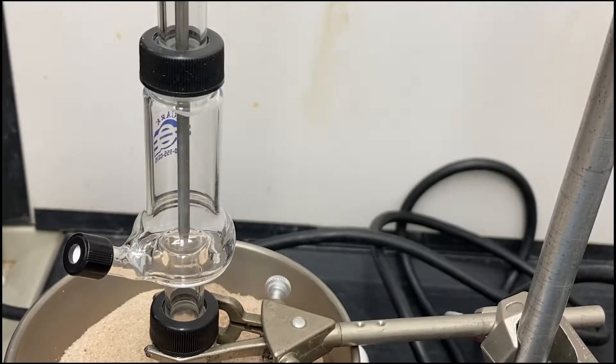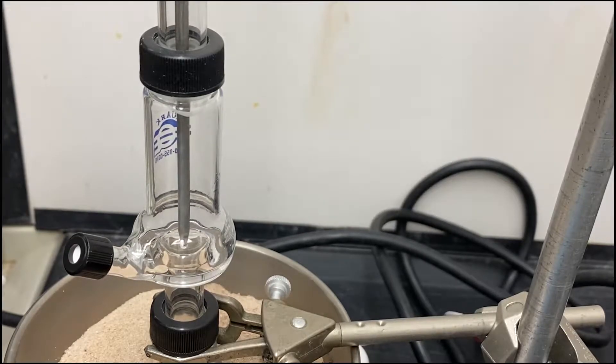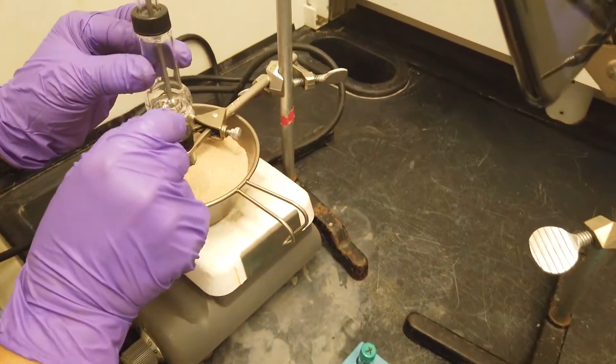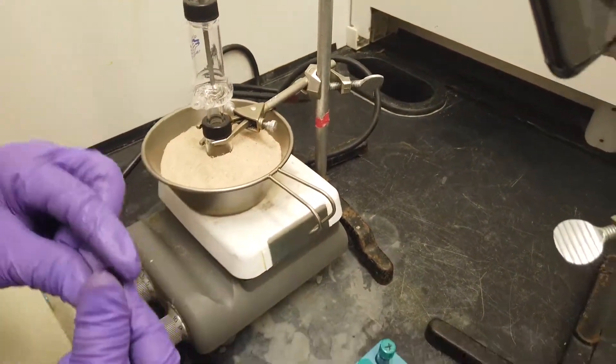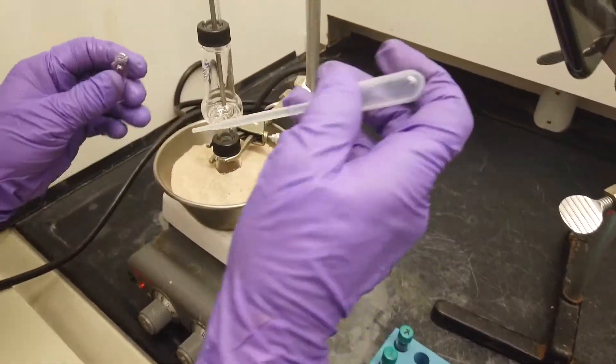The distillate is condensed in the bottom portion of the Hickman head. To collect the distillate, unscrew the cap to your collection vial and the Hickman head.